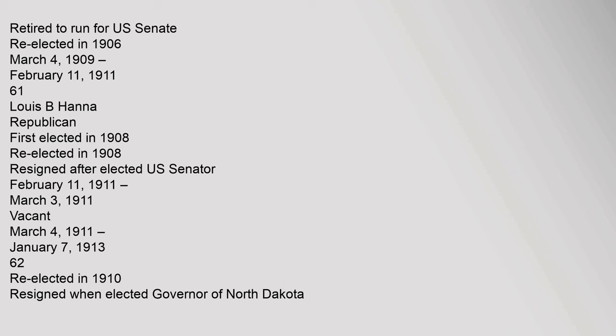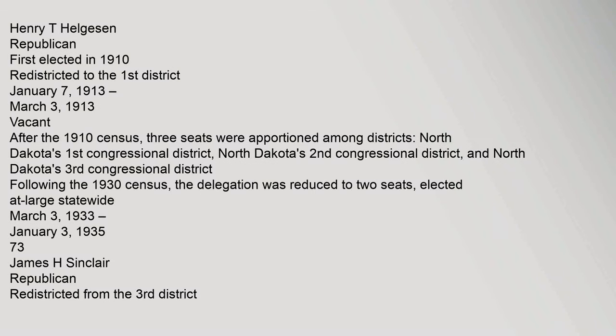From February 11, 1911 to March 3, 1911: Vacant. From March 4, 1911 to January 7, 1913 (62nd Congress): re-elected in 1910, resigned when elected Governor of North Dakota. Henry T. Helgesen, Republican, first elected in 1910, redistricted to the 1st District. From January 7, 1913 to March 3, 1913: Vacant. After the 1910 census, three seats were apportioned among districts: North Dakota's 1st, 2nd, and 3rd Congressional Districts.